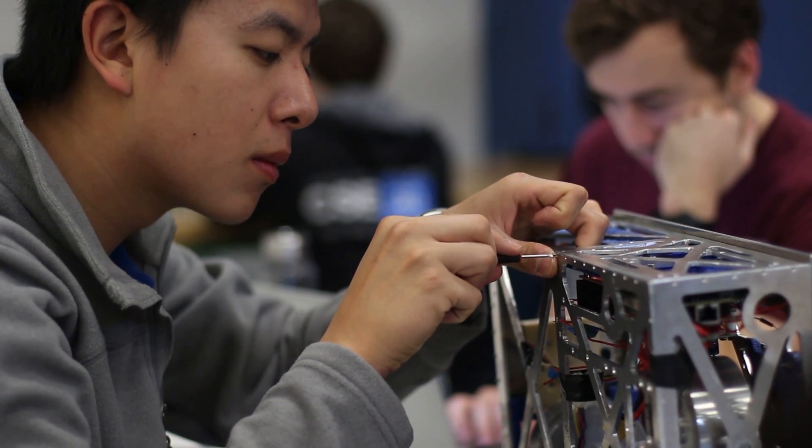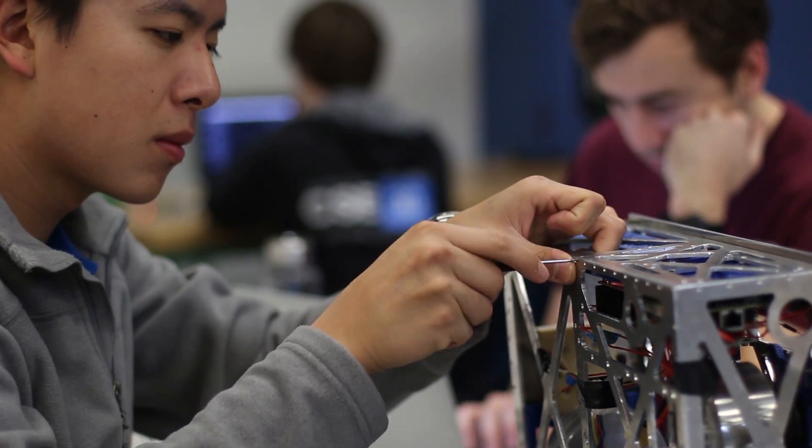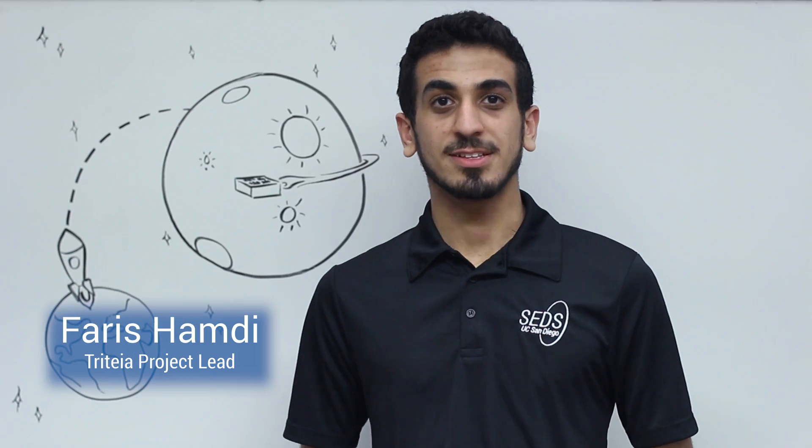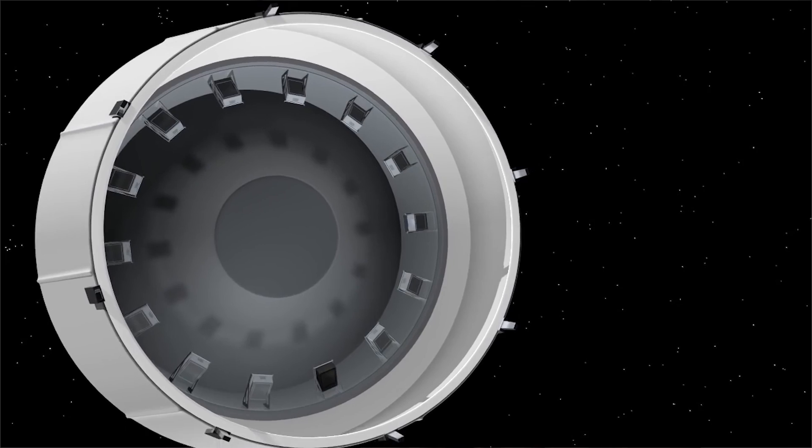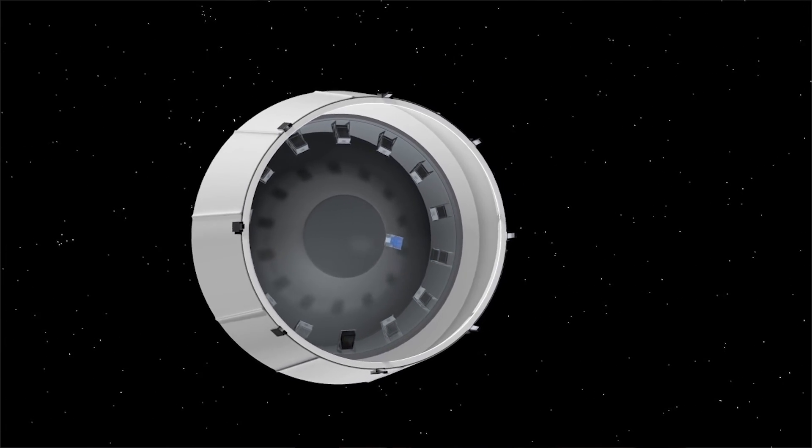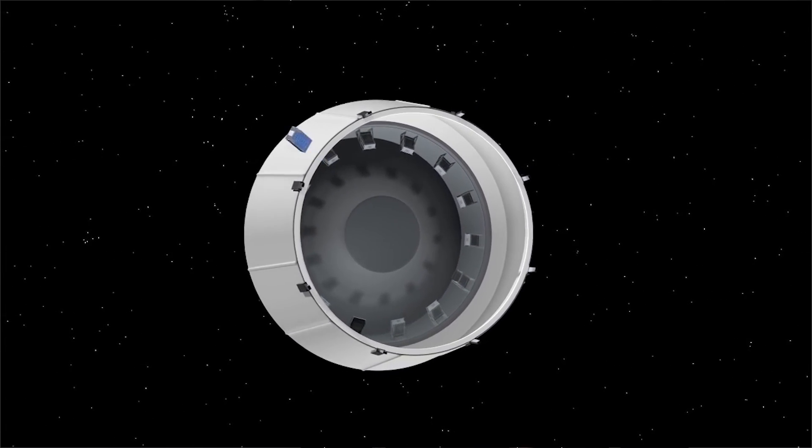Tritea is what's called a cube satellite. It's up to 400 times cheaper to build, and it's a fraction of the size. Tritea will take about six days to get to the moon for its year-long mission. We will be deployed from NASA's Space Launch System, or the SLS rocket, on its maiden flight.